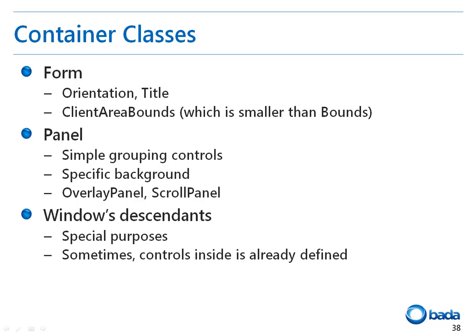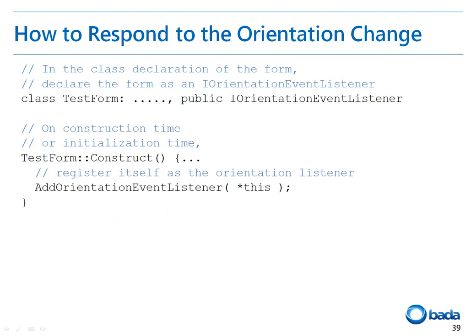In general, the subclasses of the Window class are used when a function is performed by the combination of multiple controls. Let's have a look at the functionality of the Form that is used to change the orientation of the UI when the orientation of the mobile phone is also changed.